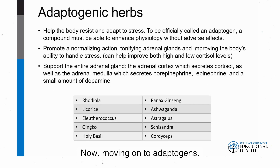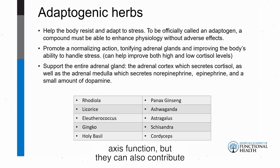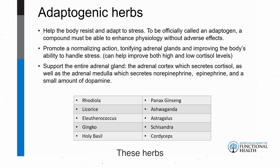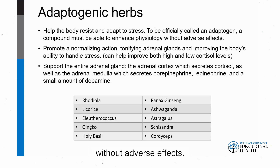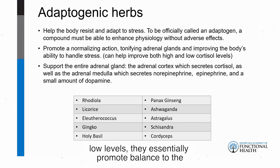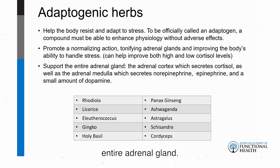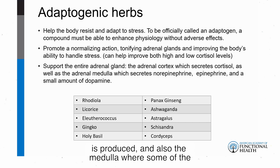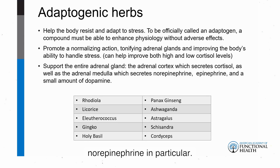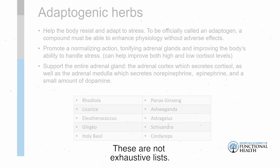Moving on to adaptogens — we're familiar with these for HPA axis function, but they can also contribute to neurotransmitter balance. These herbs and mushrooms support the body in resisting and adapting to stress. To officially be called an adaptogen, they must enhance physiology without adverse effects. Adaptogens promote optimal hormone and catecholamine levels whether the patient started with high or low levels — they promote balance to the entire adrenal gland, both the cortex where cortisol is produced and the medulla where epinephrine is secreted.